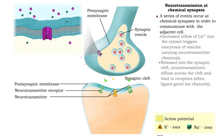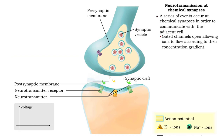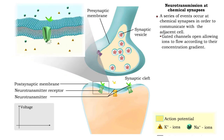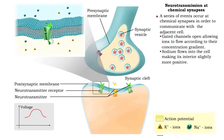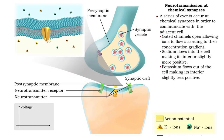Gated channels open, allowing ions to flow according to their concentration gradient. Sodium entering the cell makes the interior slightly more positive. Potassium leaving the cell makes the interior slightly less positive.